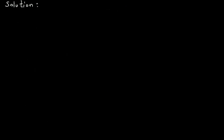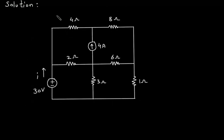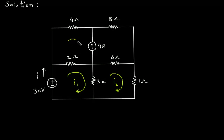First we will redraw the circuit. Now let's assume this is mesh number 1 with current I1. This is mesh number 2 with current I2. Here we can see that between mesh 1 and mesh 2 there is a current source, so this whole forms a super mesh. This is mesh number 3 with current I3, and this is mesh number 4 with current I4, and this whole forms a super mesh.